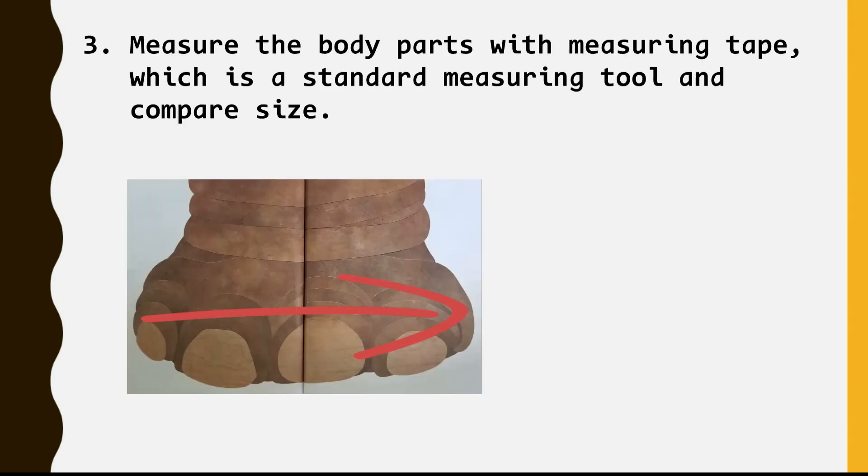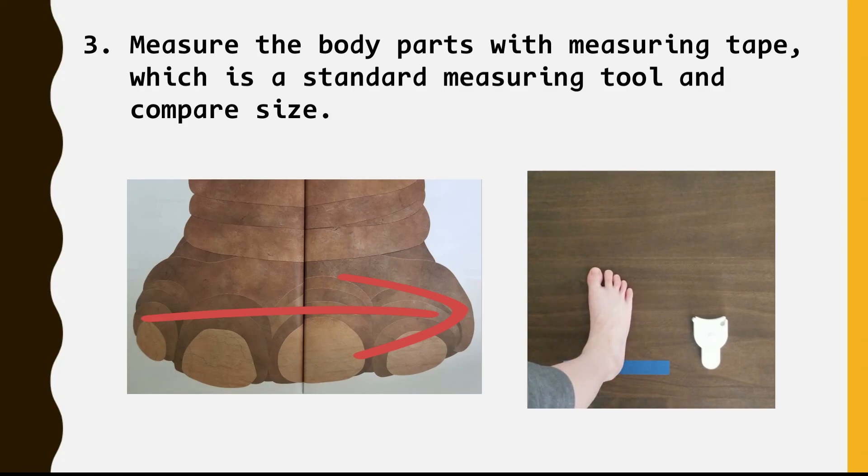Once children get used to the activity, you can increase difficulty level by measuring the body parts with measuring tape, which is a standard measuring tool. The key component to this activity is to get the children to understand they can make an approximate guess with a non-standard measuring unit, while they can accurately measure with a standard measuring unit.